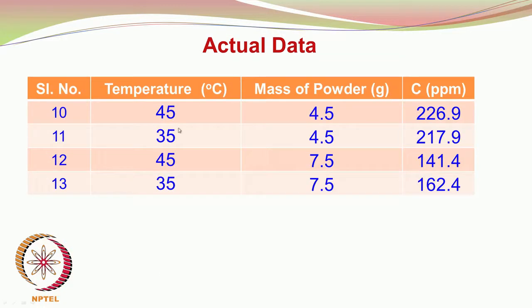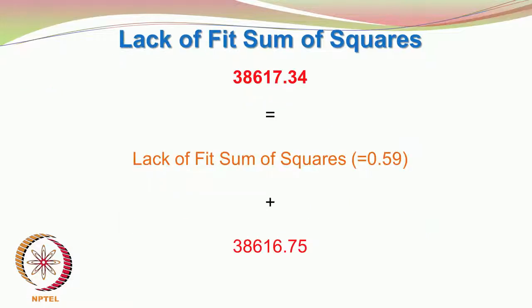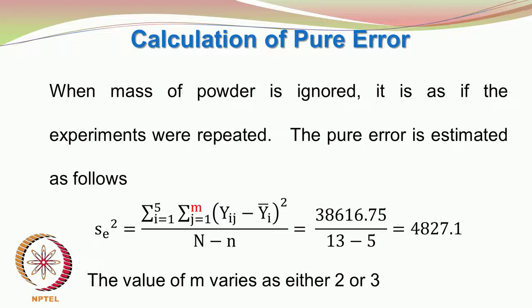When you do the experiments at 45 and 35, it is as if we are having 2 repeats only. So with this background, the pure error has to be estimated under this artificial situation where we do not account for the mass of the powder. We do not yet know whether the mass of the powder has a strong influence, but for demonstration purposes we assume it can be ignored, thereby creating some repeats.